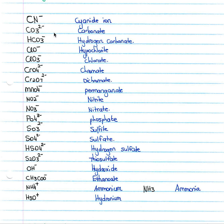ClO minus is hypochlorite, ClO3 minus is chlorate, CrO4 2- you must know as chromate, Cr2O7 2- is dichromate, MnO4 minus is permanganate, NO2 minus nitrite.